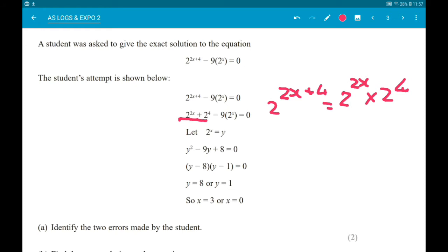However, in line number 4, 2 to the power 4 has become 8, which again is not right. 2 to the power 4 is 16. So there are all the 2 errors.